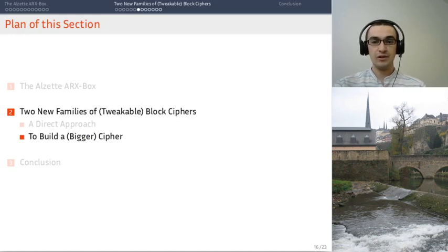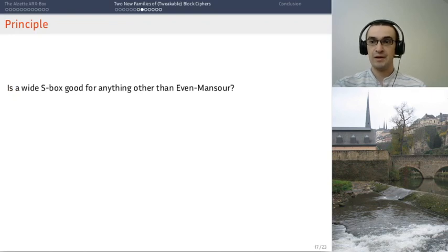But what if you don't need a lightweight block cipher, but instead something much bigger? In other words, can you use a wide s-box in another way than the trivial one, which consists in just iterating it? Can you go beyond, so we would call this kind of structure, Even-Mansour in symmetric crypto?